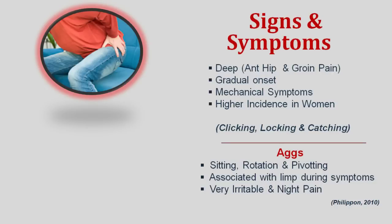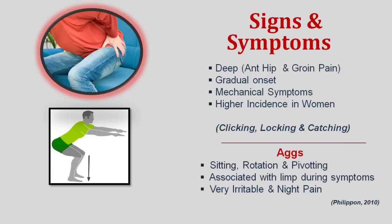Looking at aggravating factors: generally patients have an intolerance to sitting, especially deep sitting in low sofas or low seats. Activities causing rotation and pivoting can also increase pain. Generally they find squatting painful and may not be able to do a deep squat. During aggravation of symptoms they might have an associated limp. Symptoms can be very irritable and associated with night pain.